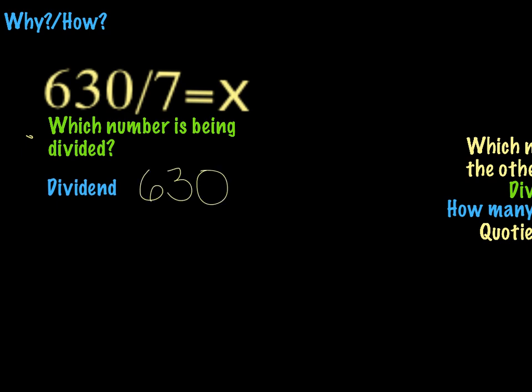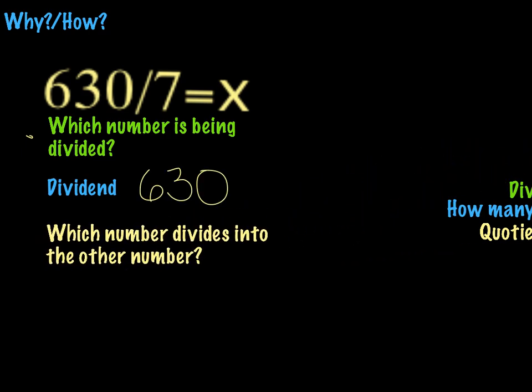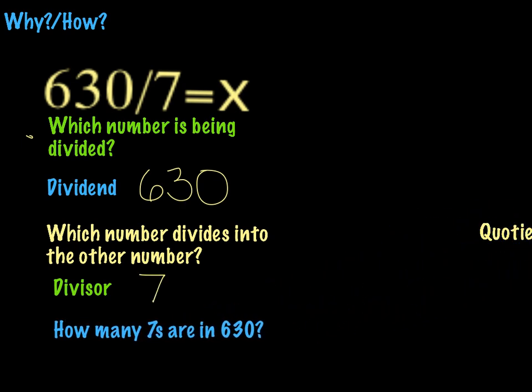Now, which number divides into the other number? That is called the divisor. And that would be what number? 7. Now, we know what the dividend is. We know what the divisor is. How many 7s are in 630?